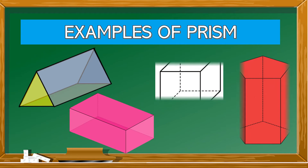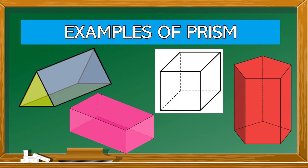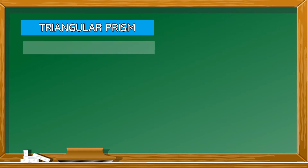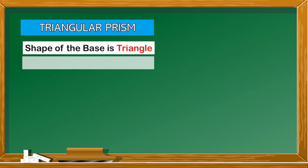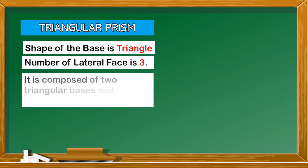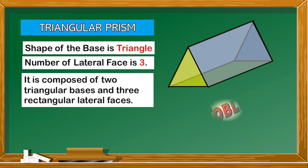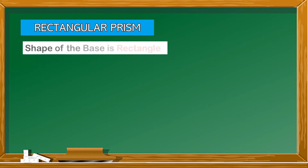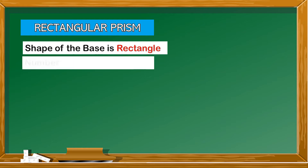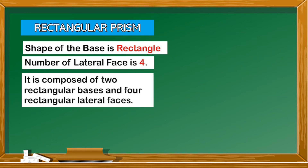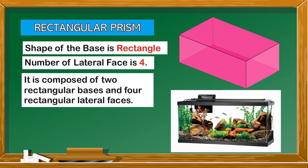Examples of prisms: A triangular prism has a triangle as the shape of its base and three lateral faces. A rectangular prism has two rectangular bases and four rectangular lateral faces. Here is an example of a rectangular prism.